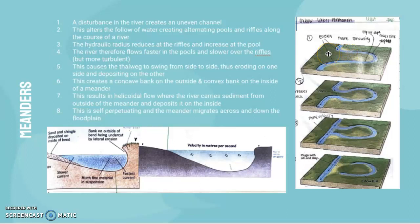It is more turbulent at the riffles. This idea of an uneven flow creates different speeds of water in the channel. This is just one relatively straight channel, but this causes the thalweg to swing from side to side, which erodes on one side of the river and deposits on the other.